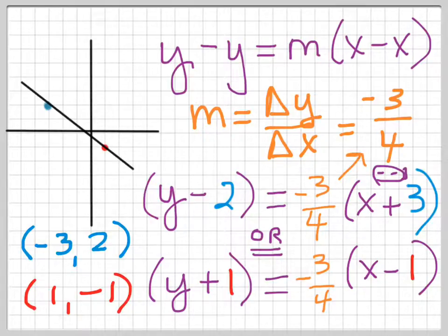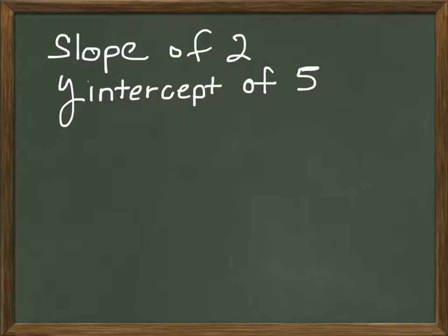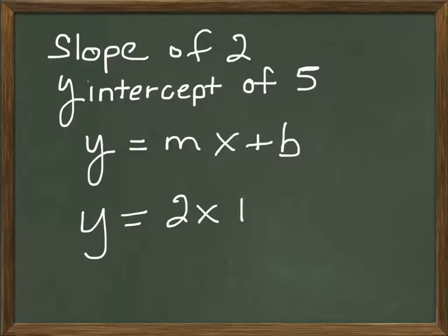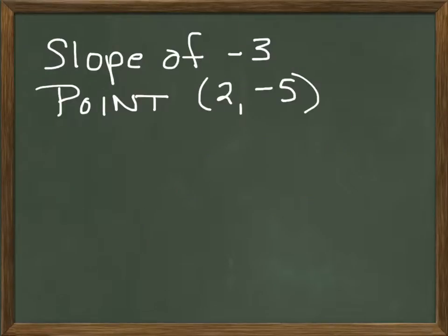Now let's look at writing the equation from given information. If we have a slope of two and a y-intercept of five, it's a no-brainer to use slope-intercept form: y equals mx plus b. We simply fill it in — y equals 2x plus 5, where 2 is our slope and 5 is our y-intercept.